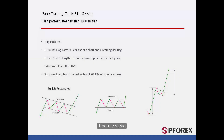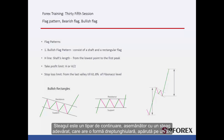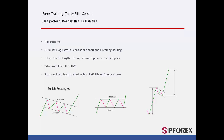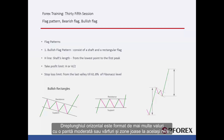A flag is a continuation pattern that, like a real flag, has a rectangular shape formed on a shaft. The horizontal rectangle is formed by several waves with a moderate slope or level peaks and valleys.